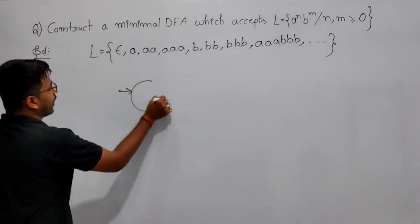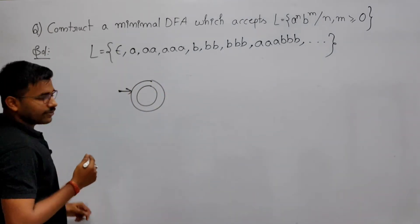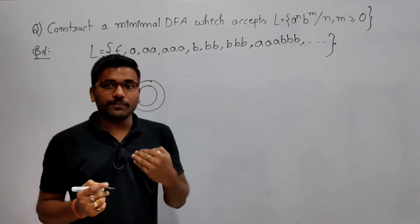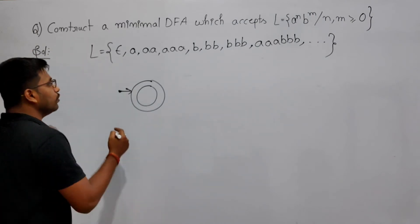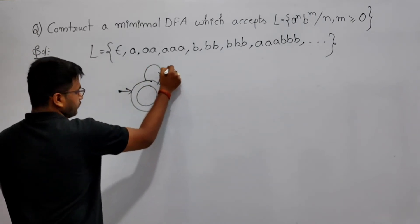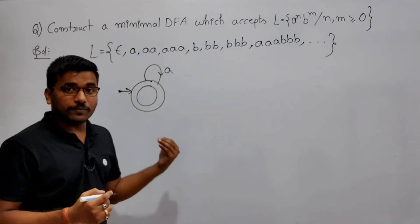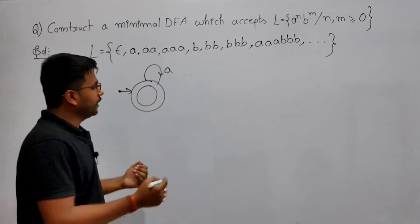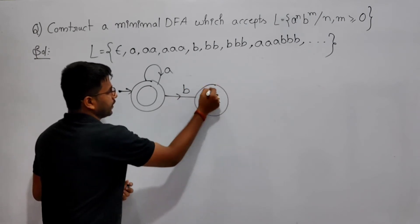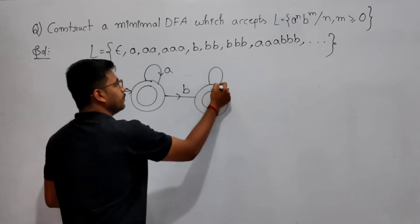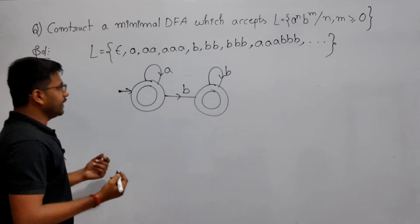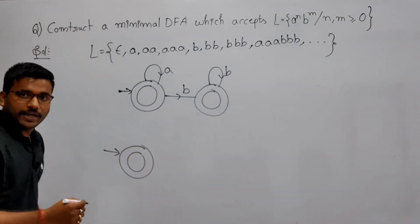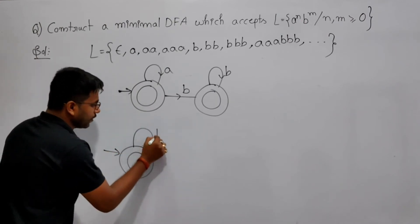Since epsilon belongs to the language, the initial state must be made a final state. We also need to accept any number of a's, so we add a self-loop on 'a' at the initial state. When a 'b' is encountered, we move to another state and add a self-loop on 'b' there to accept any number of b's.